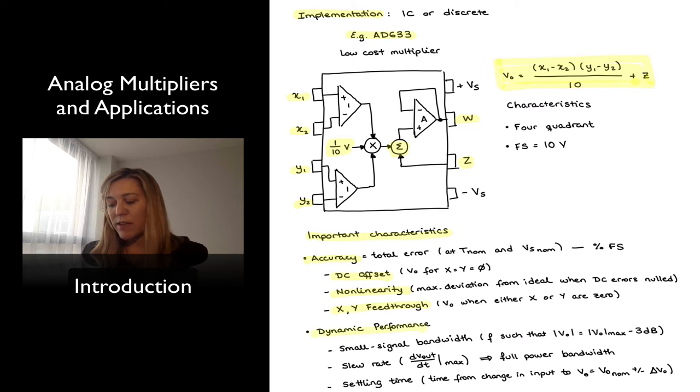The dynamic performance is specified typically in terms of the small signal bandwidth, which, just as for an op-amp, is the frequency at which the magnitude of the output voltage decreases by 3 dB from its maximum value at DC or at low frequencies. The slew rate, which represents the maximum rate of change in output voltage for a large signal, is related to the full power bandwidth, which is basically the maximum frequency of operation when the output voltage is at its maximum value. And then the settling time is the time that it takes from a change occurring in the input to produce a final output value within a certain tolerance of the nominal output value.